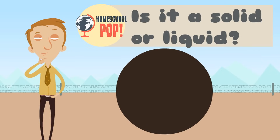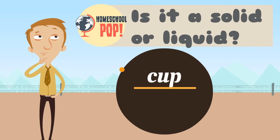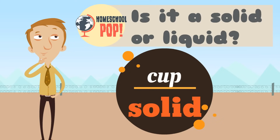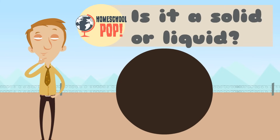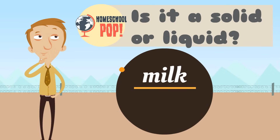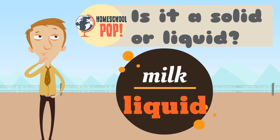How about this? A cup. Is a cup solid or liquid? Yeah, it's solid — it has its own shape. Let's try milk. Is milk a liquid or solid? Yeah, milk is a liquid. It takes the shape of its container.